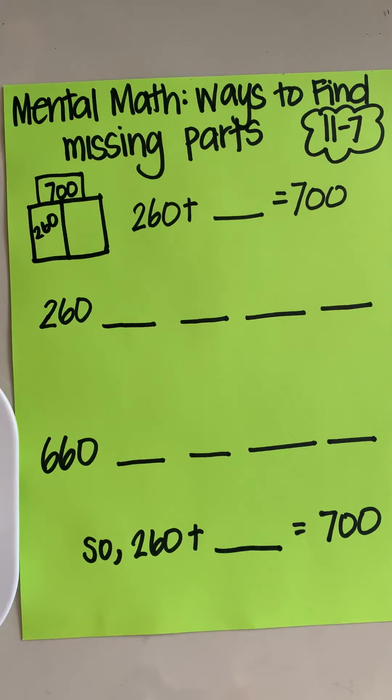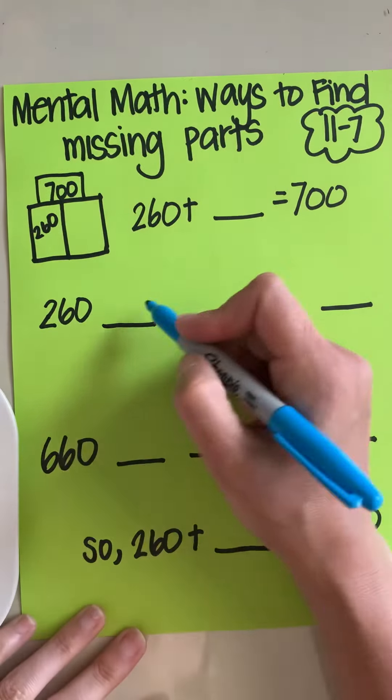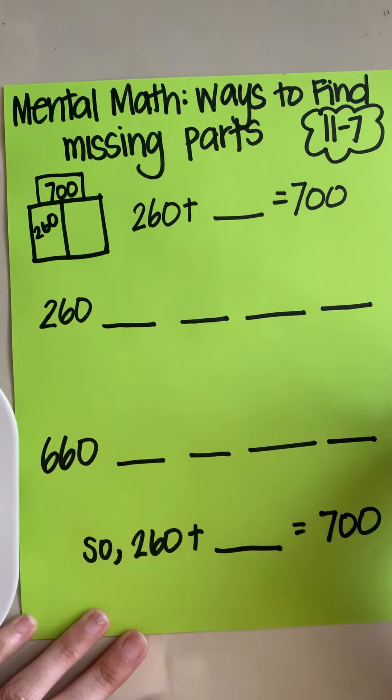So one way to find the missing part would be to count on by hundreds, very similar to last lesson where we counted back. I like to count forward. It's easier for my brain because that's how my brain works. So I'm going to count forward from 260, I'm going to count on by 100s.